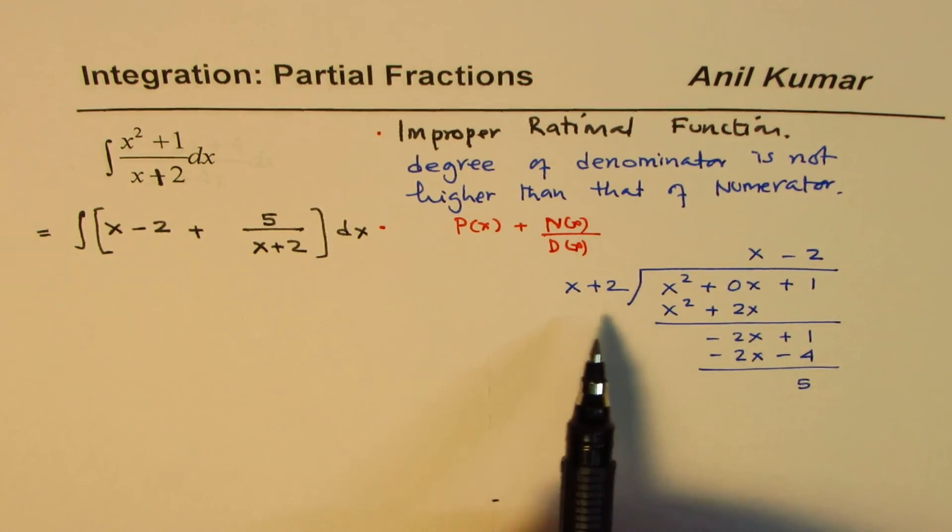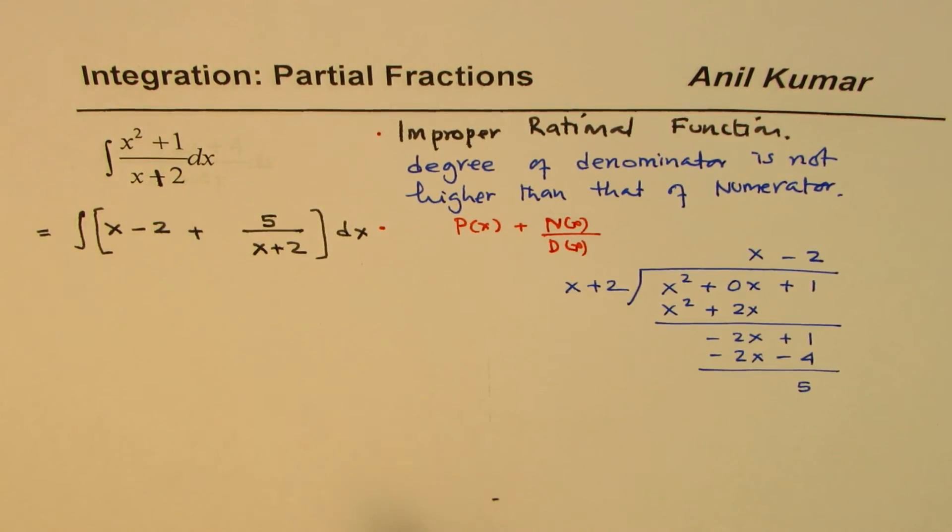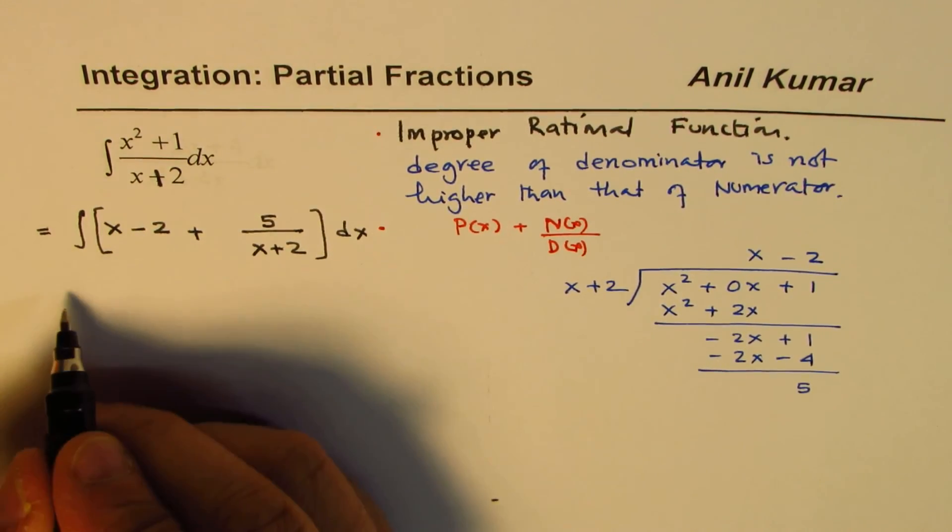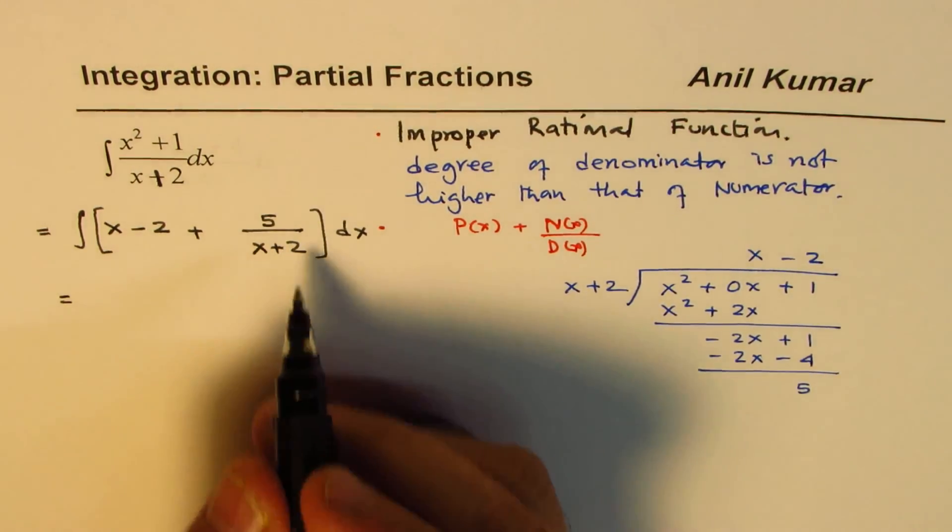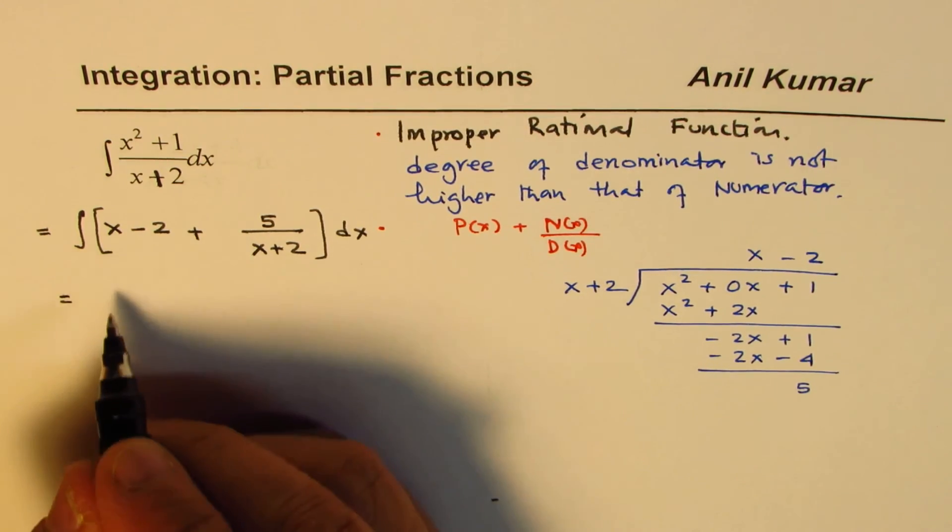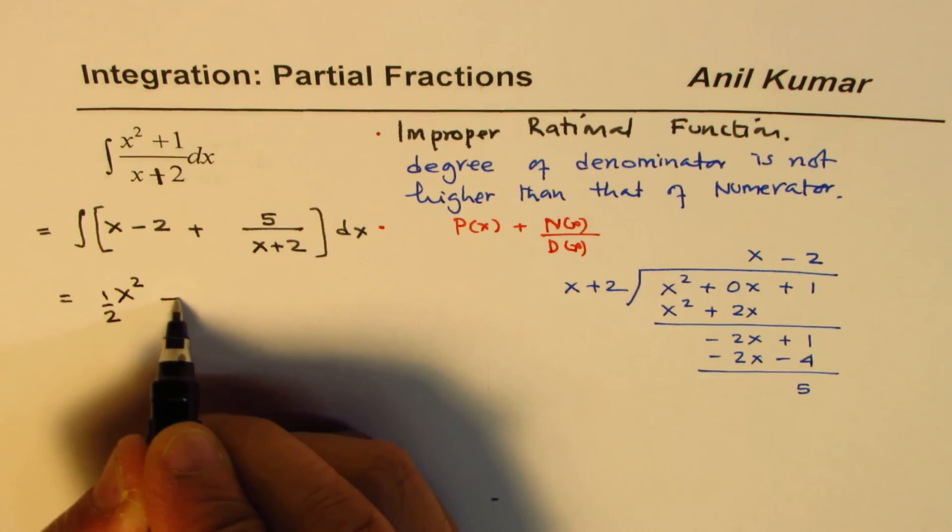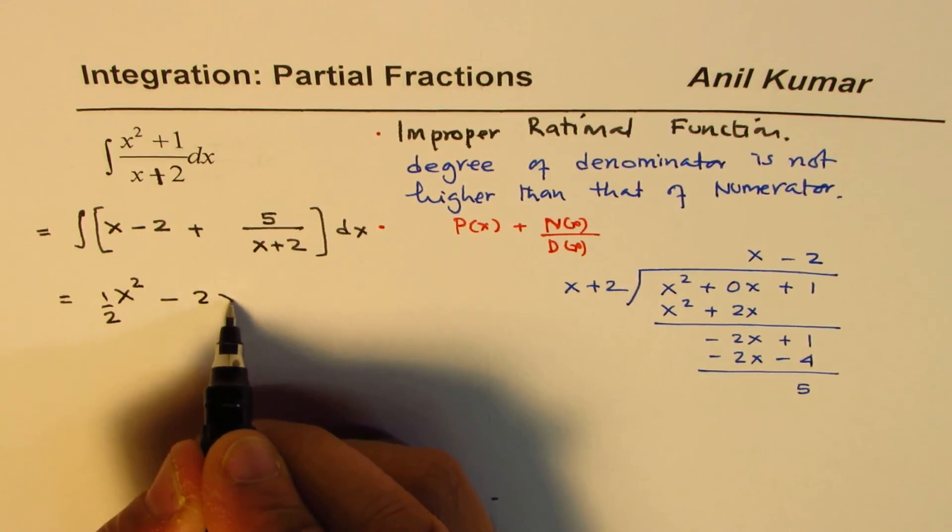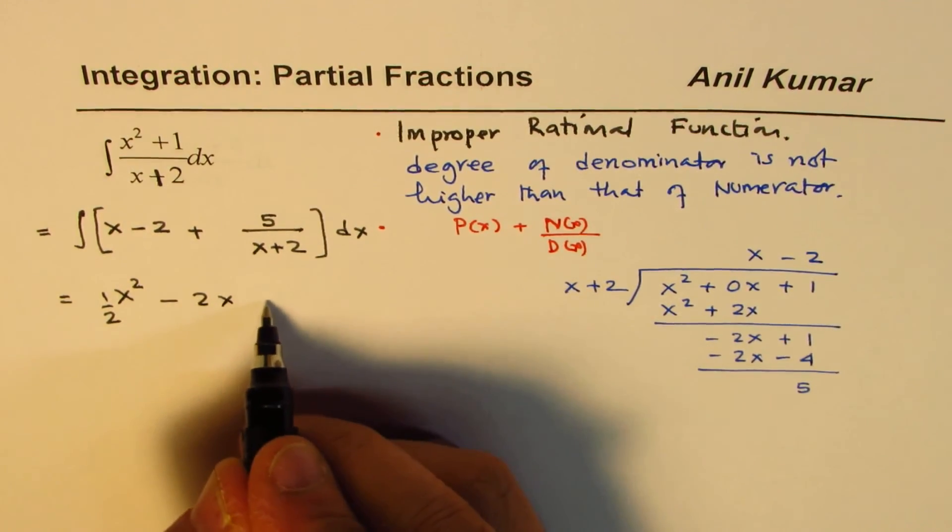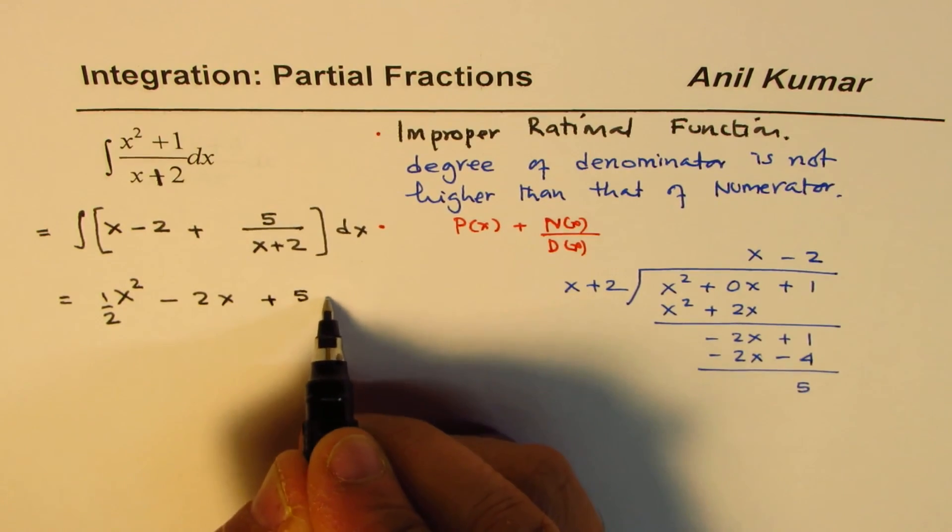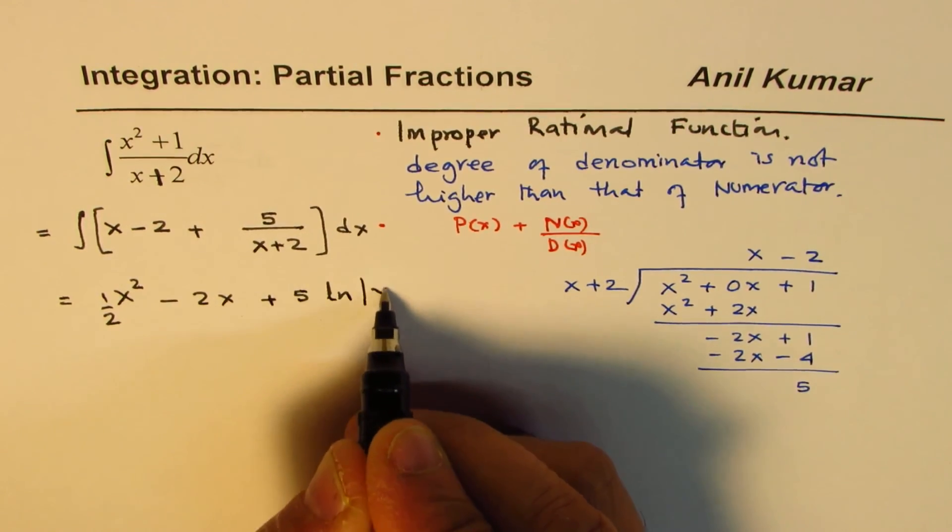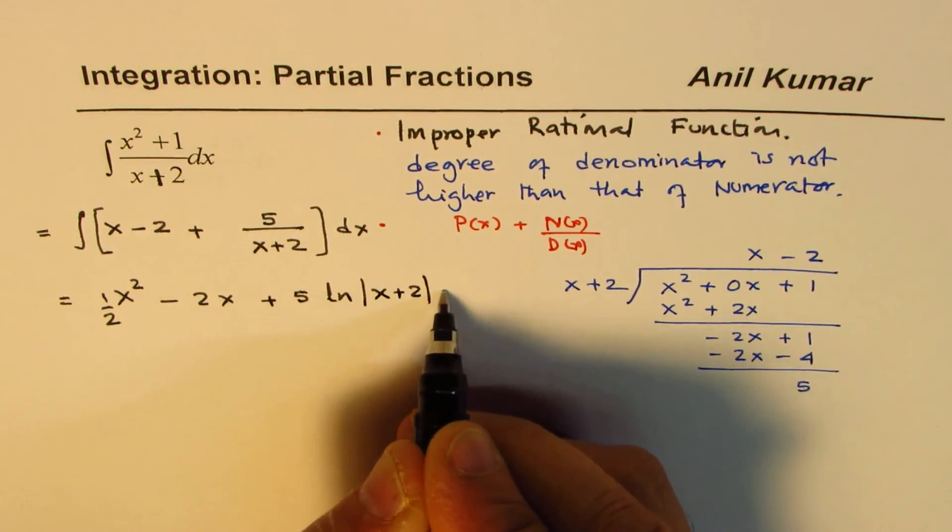In doing so, we have kind of simplified the given function. Do you see that? Now it's easy to integrate. And so you can integrate them all. So we have x as x squared half of that, minus 2x. And this part is plus 5 ln absolute value of x plus 2, plus c.